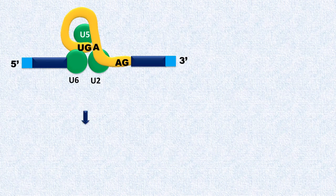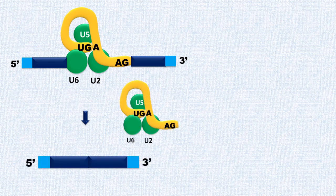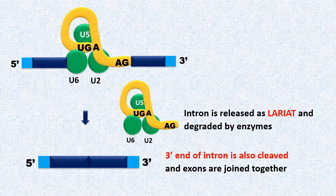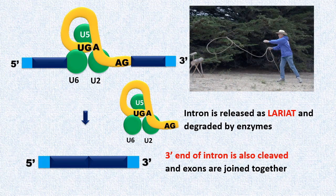In the final step, the 3' end of the intron is cleaved and exons join together. Intron is released as a lariat. The intron is called a lariat structure as it has a stem and a loop. It resembles the shape of cowboy's lariat.